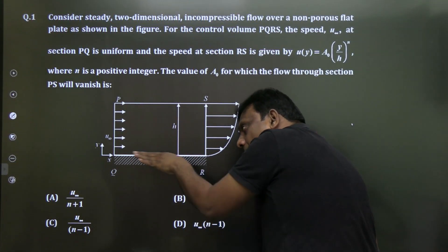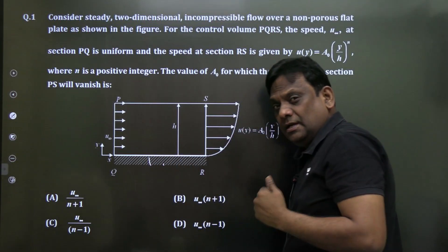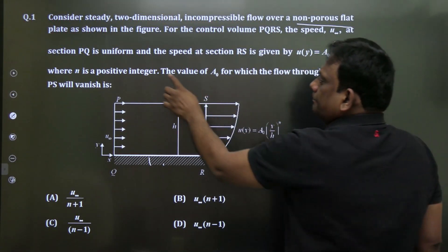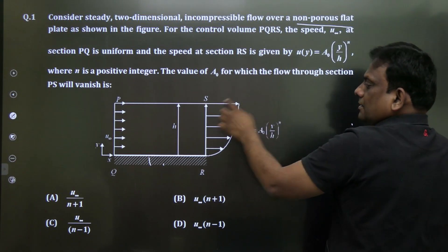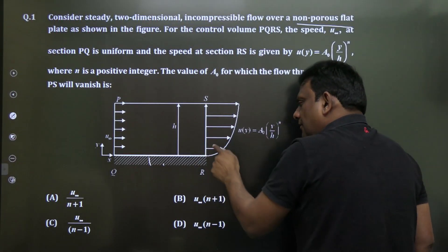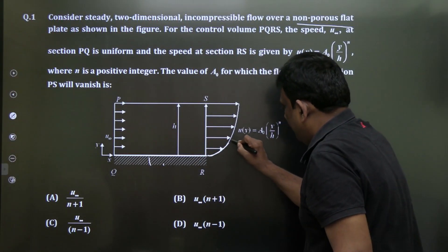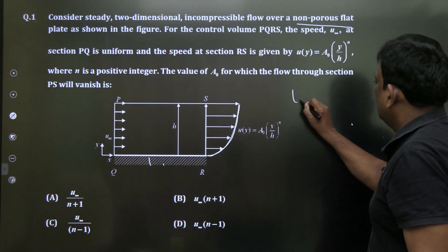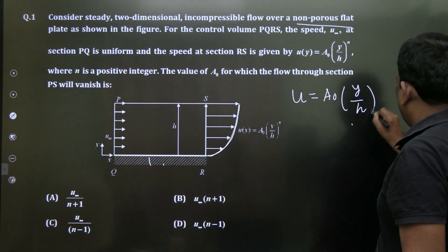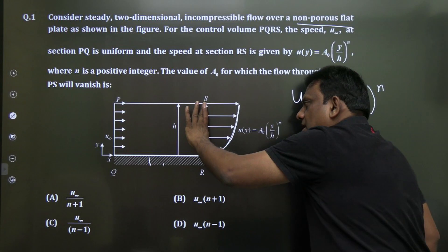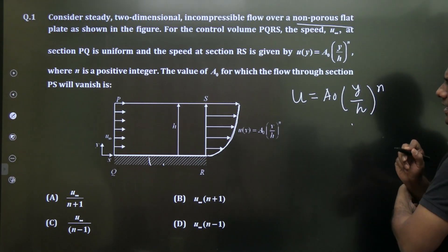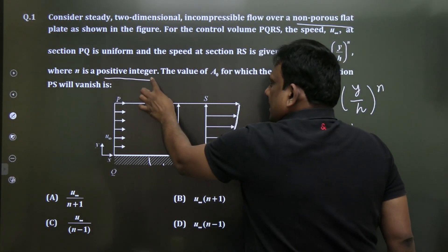Non-porous means whatever mass is entering cannot leave through the plate. Had it been porous, some mass would have left through it. The fluid enters at velocity u-infinity, which is the free stream velocity. At some distance, the velocity profile is u = a₀(y/h)^n, where h is the boundary layer thickness and n is a positive integer.